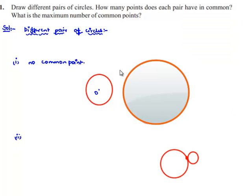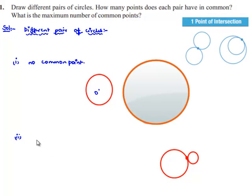Secondly, let us consider a pair of circles having one point in common. As shown in the figure, the circles with centers O and O' have only a single point in contact.